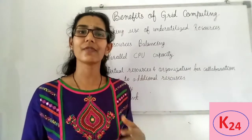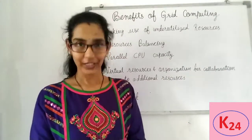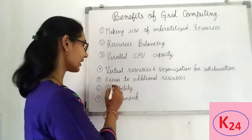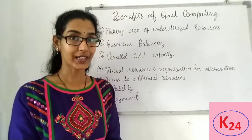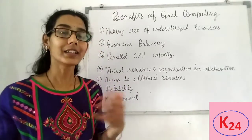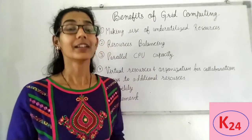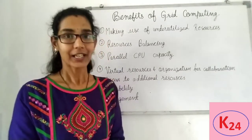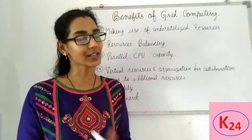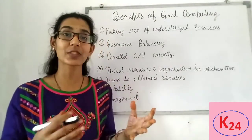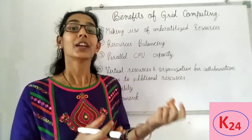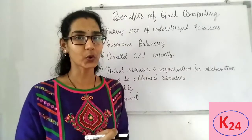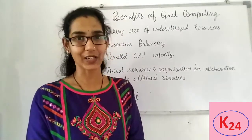Aur iske liye different policies, different rules, regulations in ko follow kiya jata hain. Now the next one is access to additional resources. Grid computing mein CPU aur storage resources ke alawah other resources bhi use kiya jata hain, like internet bandwidth ko bhi access provide kiya jata hain. For example, kisi user ko ek complex task process karna hain aur uske paas limited internet bandwidth hai, then woh grid mein se kisi computer se uski internet bandwidth ko borrow kar apni bandwidth ki total ko bada lega, aur us task ko simply easily execute karay ga.